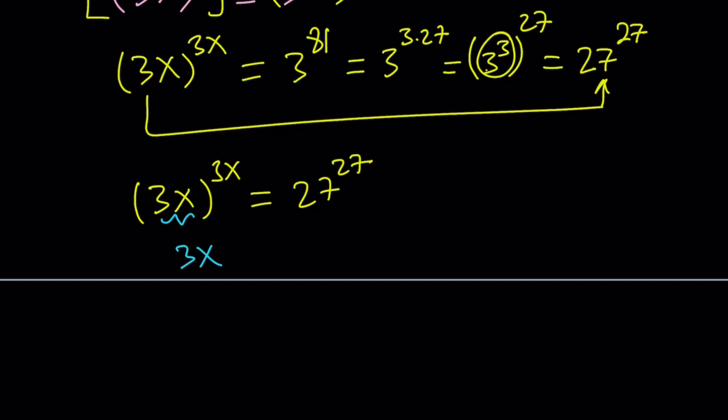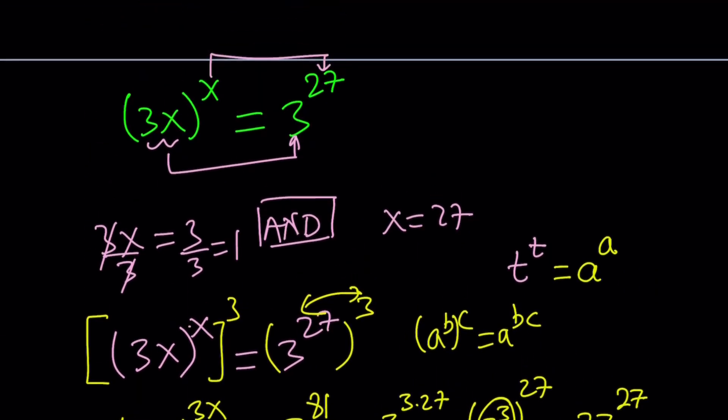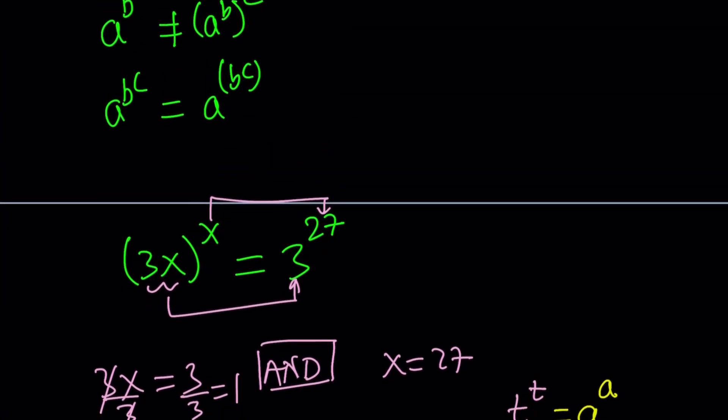But is that the only result we get from here? We're going to talk about that. This definitely gives us a solution because it works. 3x equals 27 gives us x equals 9, and that's actually a valid solution. The million dollar question is, is there another solution, or is this the only solution?